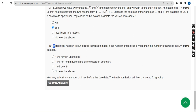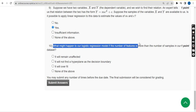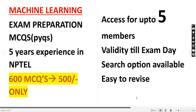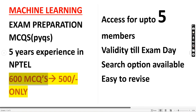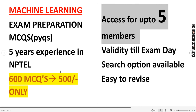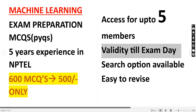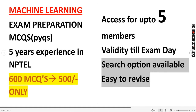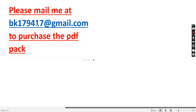Now let's move on to the final question, question 10: What might happen to our logistic regression model if the number of features is more than the number of samples in our dataset? Quick reminder — we have 600 exam preparation MCQs with explanations for just 500 rupees, with access for up to five members till the exam day. Please mail me at the email ID provided. Already many students have taken this.